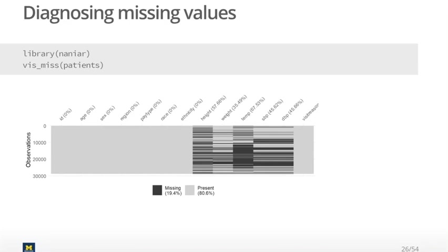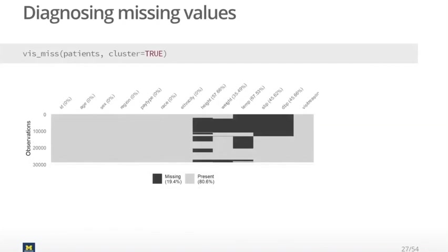But if I were to ask you what the patterns of missingness are — which variables tend to go missing together — you might get some inclination that systolic and diastolic blood pressure appear to go missing together, because every time you see a black line under systolic blood pressure, that line almost always extends to diastolic blood pressure as well. But if you wanted to visualize that more clearly, all you need to do is add the argument 'cluster equals true' to the viz_miss function.